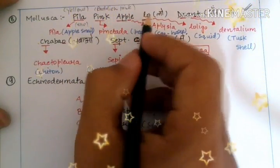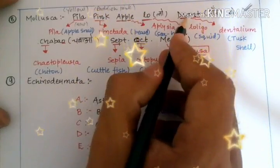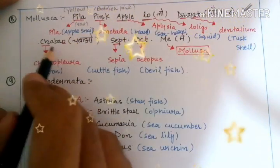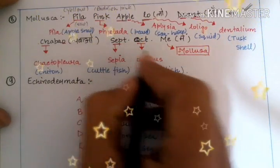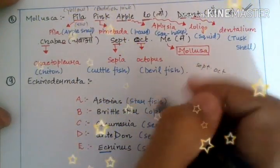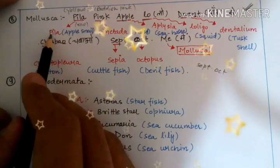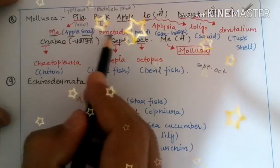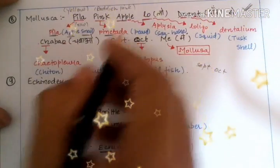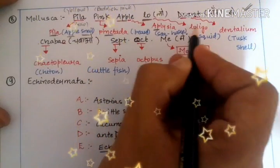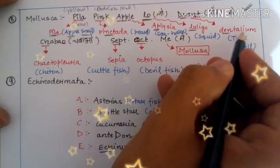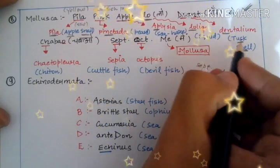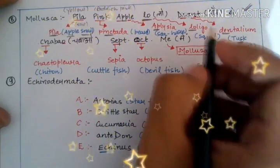So the trick is: 'Pila pink apple lo, daato se chabao, September October May.' Pila means Pila globosa, that is the apple snail. Pink means Pinctada, that is the pearl oyster. Apple means Aplysia. Lo simply means Loligo. Daat means Dentalium, which is also known as tusk shell — just like the tusk of an elephant, so Dentalium is also known as tusk shell.